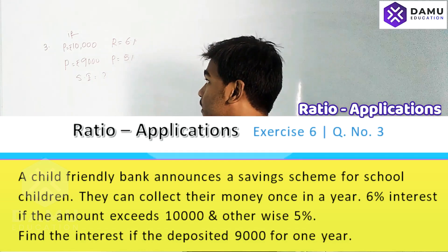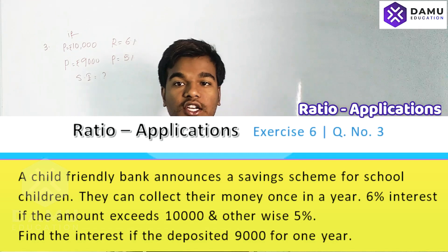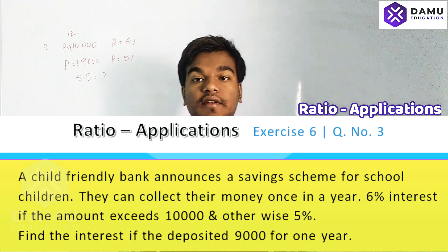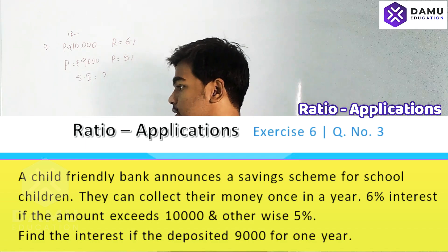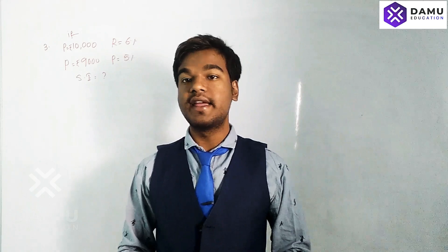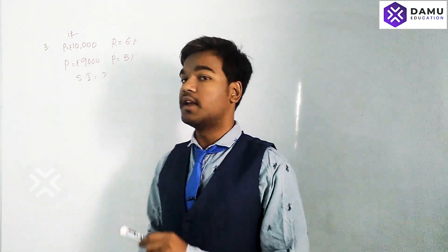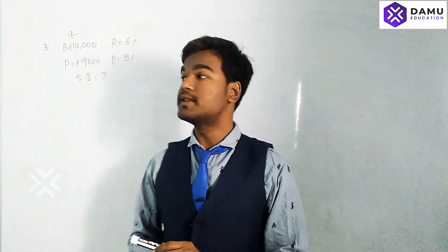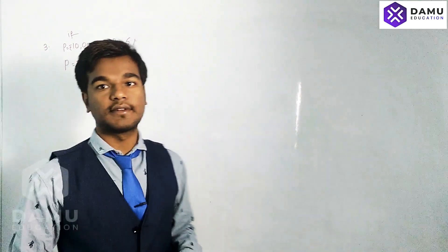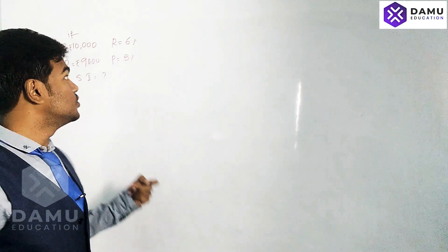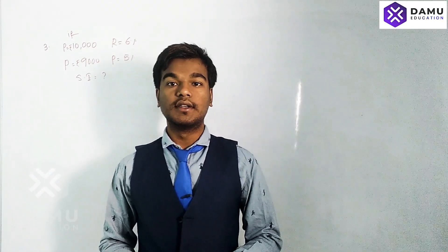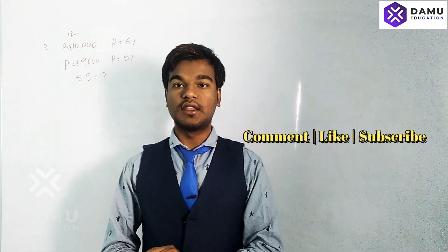Our third question is about a friendly nature bank for school children. Given one offer: if they are going to make deposits of ten thousand or more, the bank will give a rate of interest of six percent. Otherwise, if the deposit is less than ten thousand, they will give five percent rate of interest.